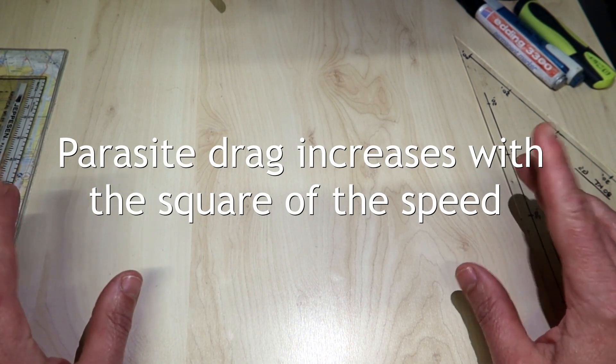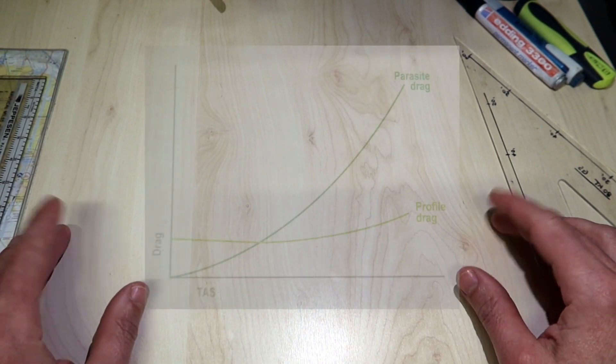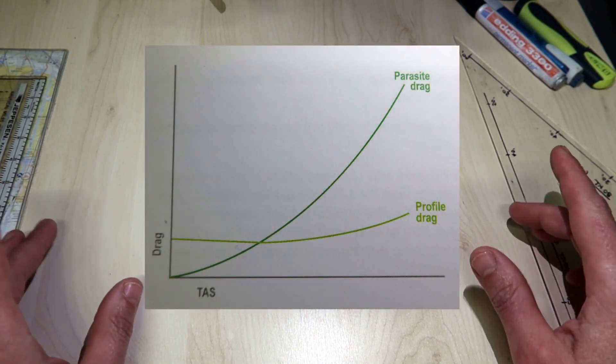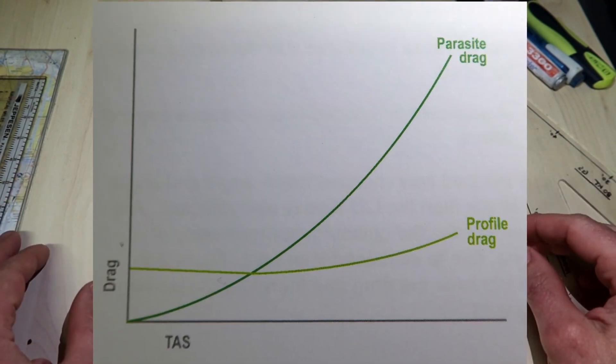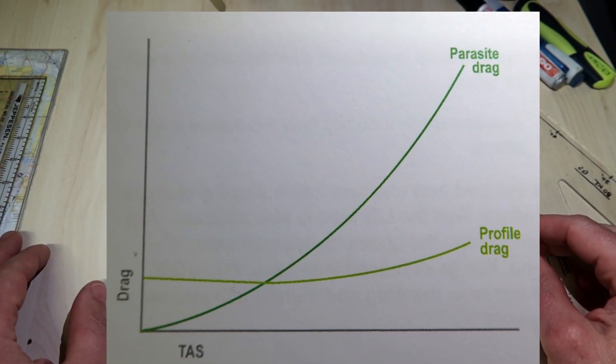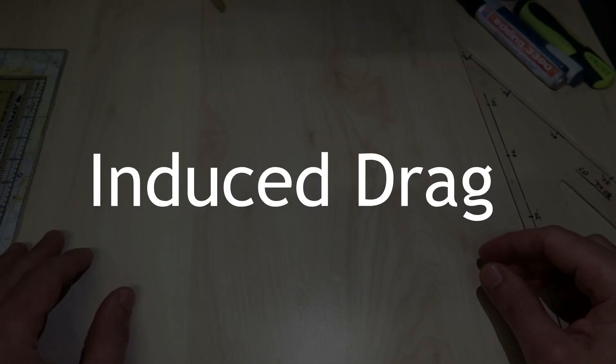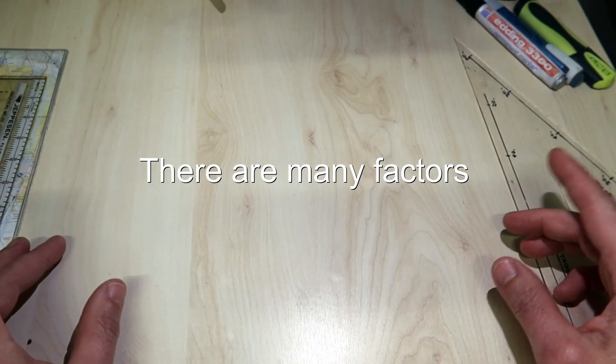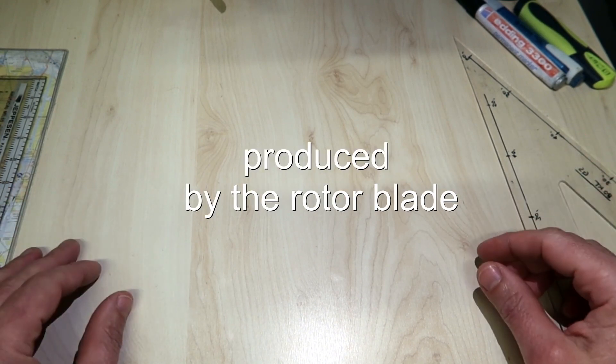Parasite drag is the drag contribution from the fuselage and also increases by the square of the speed. The change of rotor profile drag and parasite drag with forward speed looks like this.